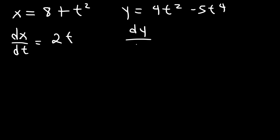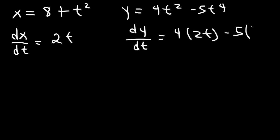Now, to find dy/dt, it's going to be the derivative of t squared, which is 2t, times 4. And the derivative of t to the 4 is 4t to the third. So this becomes 8t minus 20t to the third.